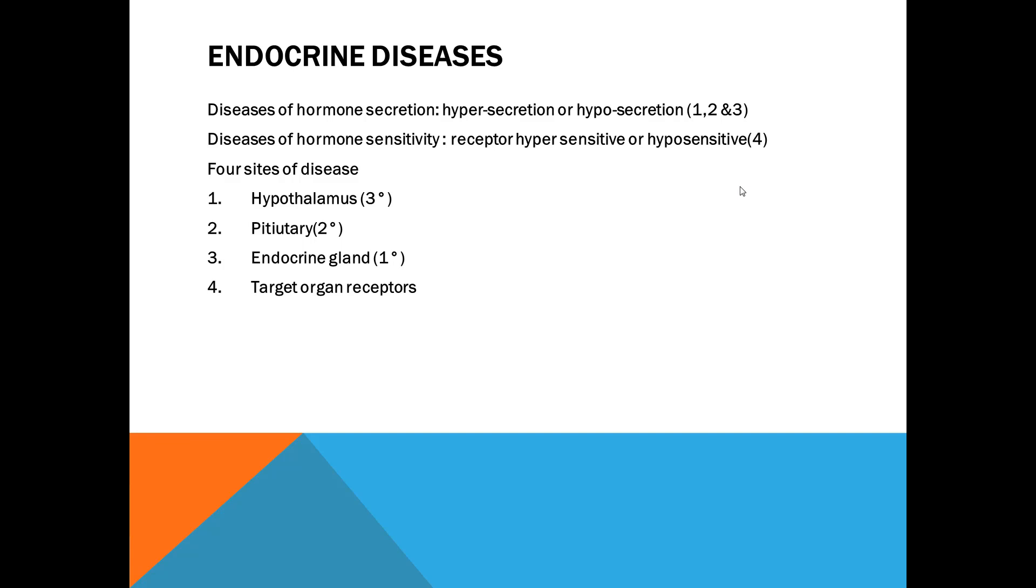Endocrine diseases: what are the endocrine diseases? They can occur due to two things. Disordered secretion of hormone—there can be hypersecretion or hyposecretion of the hormone. If it is at hypothalamus level, we call it tertiary disease. At pituitary level, we call it secondary disease. And at endocrine gland level, we call it primary disease. So that is related to hormone secretion. Other set of diseases is hormone sensitivity—the target organ receptors either can be hypersensitive or hyposensitive. So that is at the level of target organ.